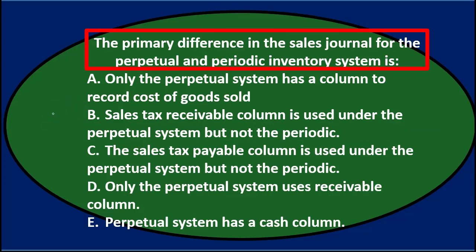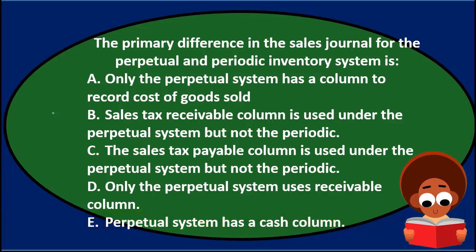Next question: the primary difference in the sales journal for the perpetual and periodic inventory systems is A. only the perpetual system has a column to record cost of goods sold, B. sales tax receivable column is used under the perpetual system but not the periodic, C. the sales tax payable column is used under the perpetual system but not the periodic, D. only the perpetual system uses a receivable column, E. the perpetual system has a cash column.